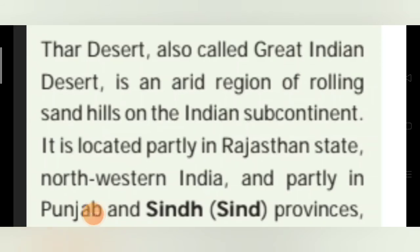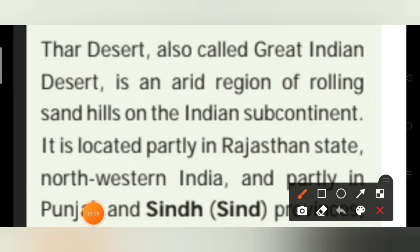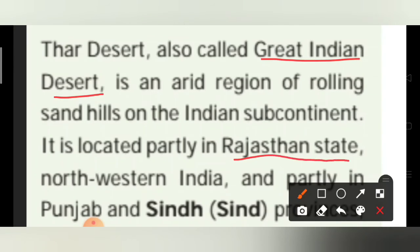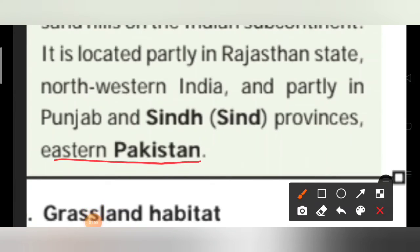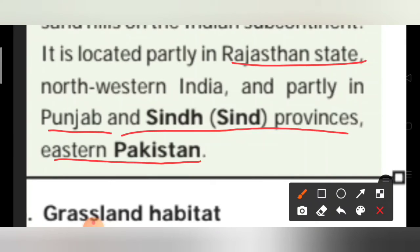In our country, we have the Thar Desert, also called the Great Indian Desert. It is an arid region of rolling sand hills on the Indian subcontinent, located partly in Rajasthan state in northwest India, and partly in Punjab and Sindh provinces of Pakistan.